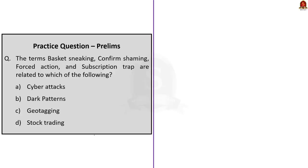Let us take up the first question. The terms basket sneaking, confirm shaming, forced action and subscription trap are related to which of the following? From our dark patterns discussion, we know that the correct answer here is option B, dark patterns.